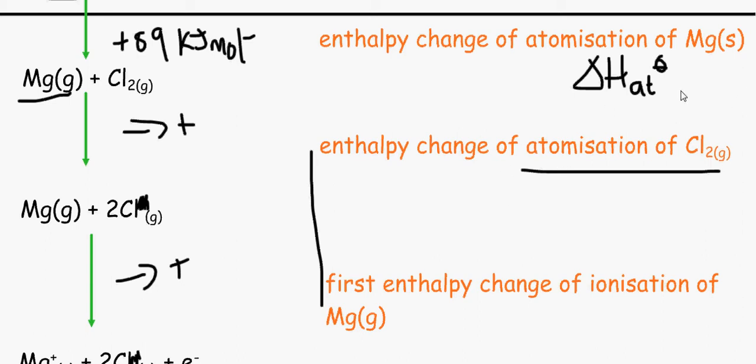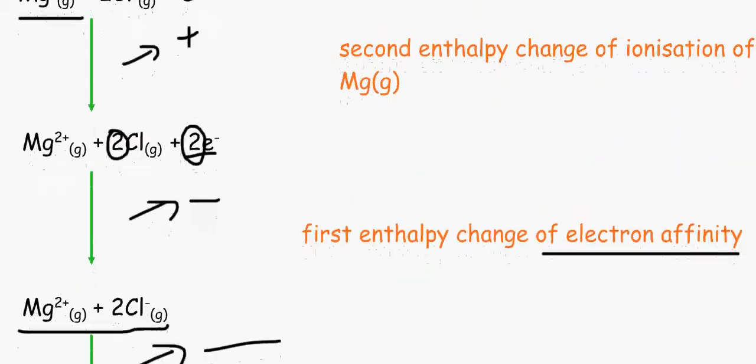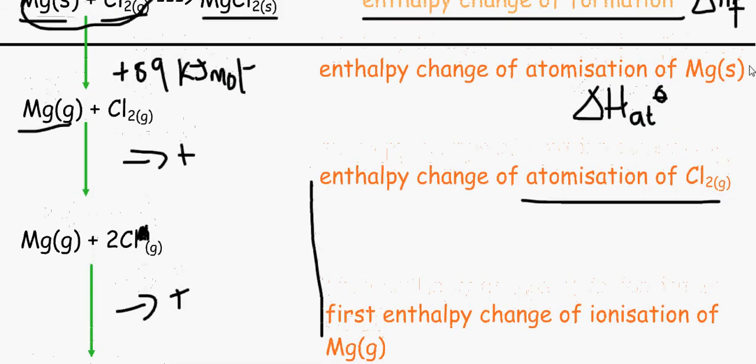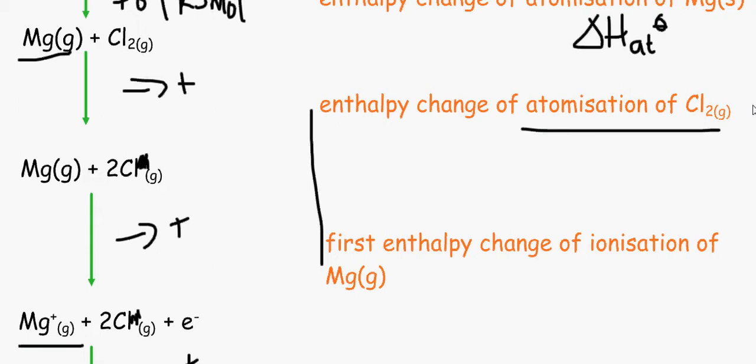Usually what I like to do is organize the information, so we have the atomisation first, then we've got ionisation, and then we've got electron affinity. Sometimes in the exam they may give you atomisation, ionisation, and then atomisation again because they like to group things in order of elements. So we've got atomisation, then ionisation, then electron affinity, then Lattice Enthalpy.